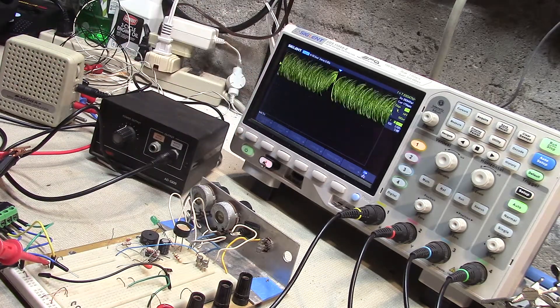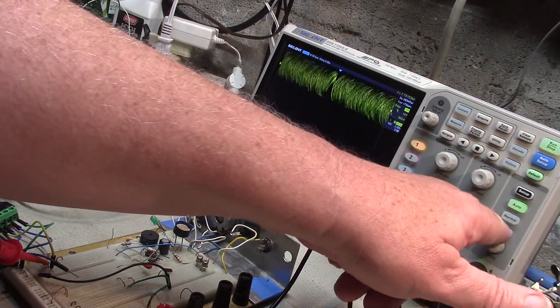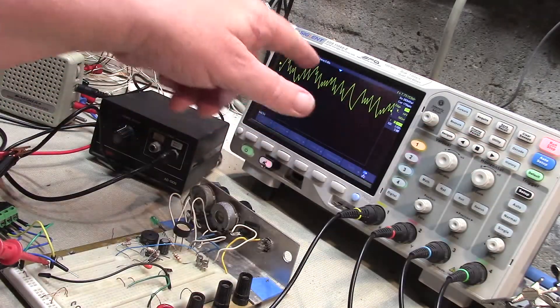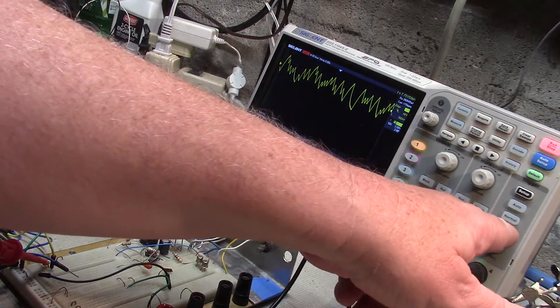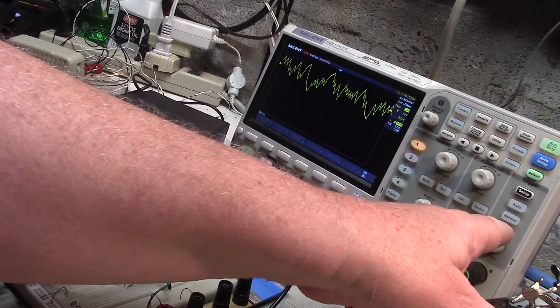But once it gets through the amplifier, which has a roll-off, then it looks like this, kind of just a series of triangles, which would be your square wave going through an audio amp.